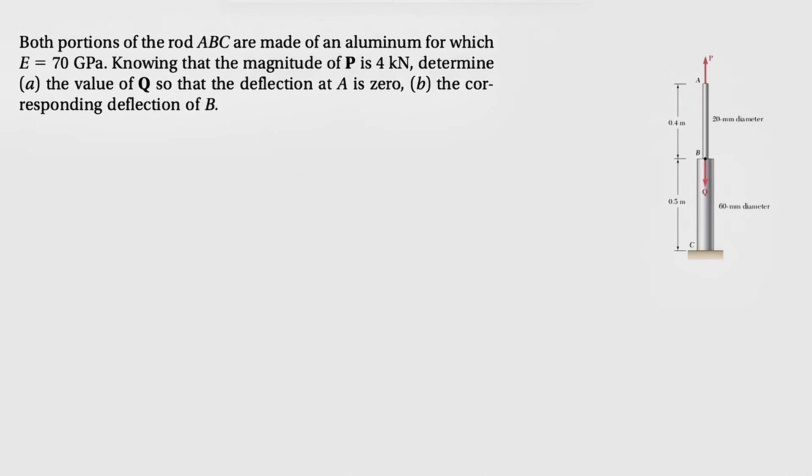Alright guys, this is going to be an interesting one. Another question from the second chapter of the Mechanics of Materials by Beer and Johnston. And this one, we know that both portions of the rod ABC are made of aluminum, which has the elastic modulus of 70 gigapascals.